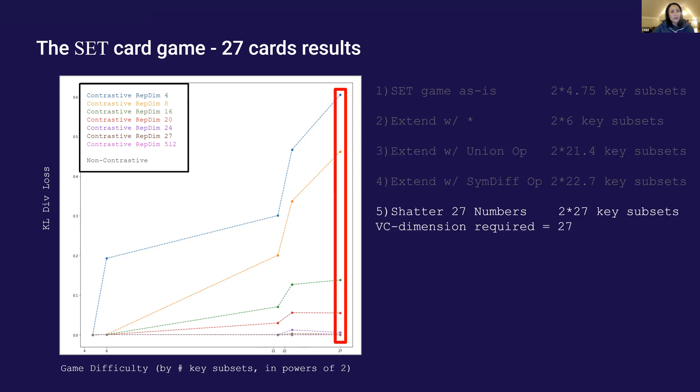Finally, on shattering 27 numbers, the model needs to satisfy a VC dimension of at least 27 so all the models with vector dimensions less than 27 fail to varying extents.